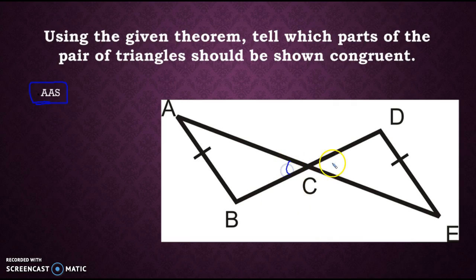So right off the bat, I see vertical angles. So I know that the vertical angles are congruent, and so I've got a side and an angle, and this angle is not touching the side. So that means that I need an angle that's going to be between the angle and side.